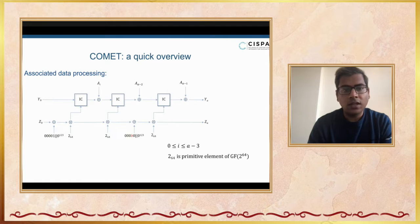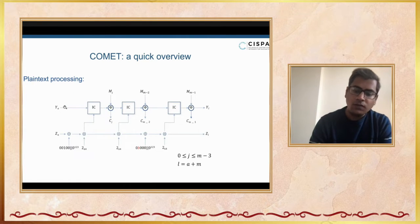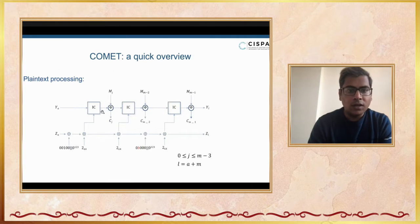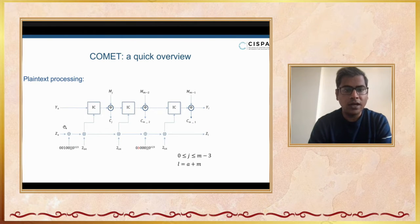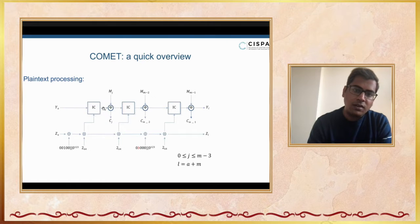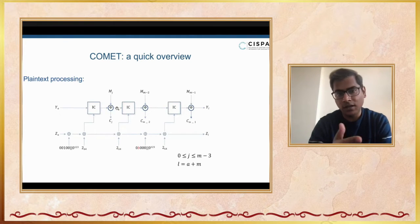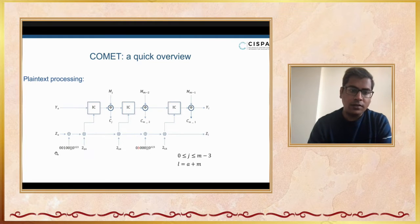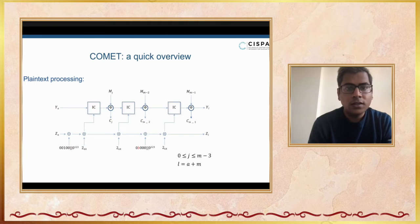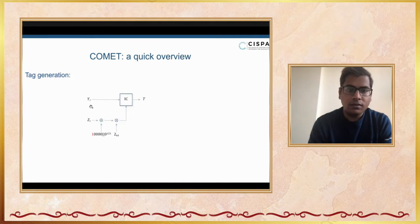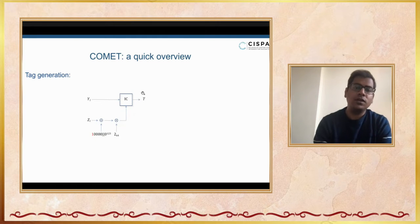This is the AD processing, and then comes the plaintext processing. For plaintext processing, we start with the state and the block key that we get back from AD processing. We encrypt the initial state using an updated key from ZA. After that, we use a linear function phi over this updated state and the message M to get back the ciphertext C and the next input state for processing. The control bit absorption is exactly similar as before, but the control bits are slightly different.